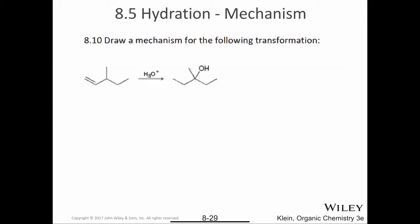Take a look at an example: draw a mechanism for the following transformation. I have this alkene treated with hydronium to end up with this tertiary alcohol. First, I draw out the Lewis structure of hydronium to start my curved arrows because my alkene is going to function as a base. When I draw the curved arrow from the pi bond to the hydrogen of the hydronium, I like to draw it through the carbon where the hydrogen is going to be attached.